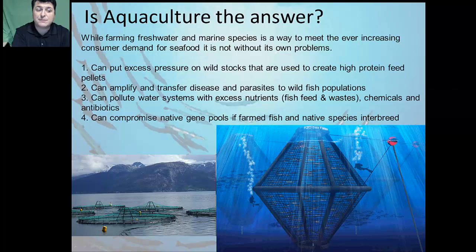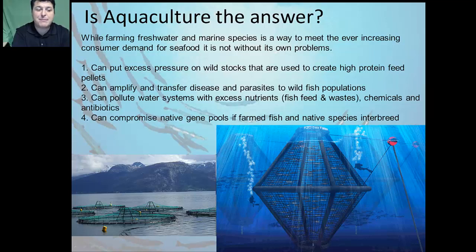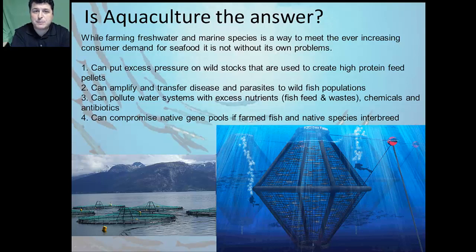Aquaculture can also pollute water systems with excess nutrients. Excess fish feed that wasn't consumed and fish waste can pollute the environment, as well as the chemicals and antibiotics used to minimize disease in farmed fish. Finally, another big issue with aquaculture is that it could actually compromise native gene pools. If farm fish escape and native species interbreed, we are destroying our native genetic biodiversity.